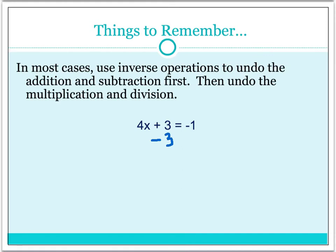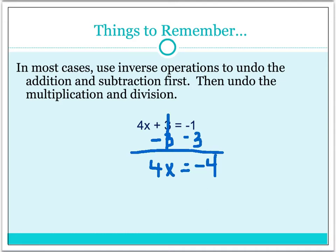What we do to one side of the equal sign, we must do to the other side. Once that happens, we end up with 4x is equal to negative 1, and negative 3 becomes negative 4. So now we start with this equation and say, okay, we now need to get rid of this 4 that is being multiplied to the x. That's the second thing we now undo.